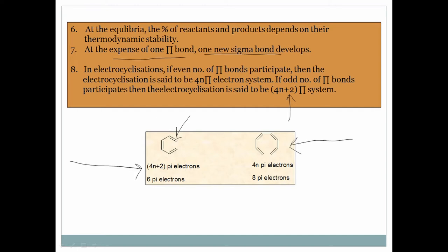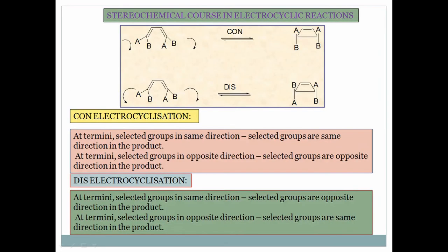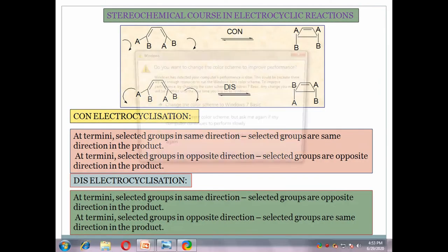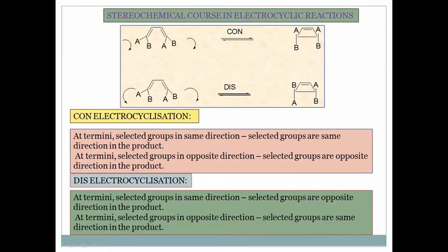In electrocyclization, first you have to decide whether the system is 4n pi or 4n+2. Then consider the stereochemical course. There are two modes of electrocyclization: conrotatory (con) mode and disrotatory (dis) mode. In con mode, both terminal groups rotate in the same direction — both clockwise, or both anti-clockwise.